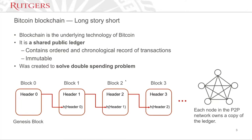Blockchain is the underlying technology of Bitcoin, and Bitcoin is the application of blockchain — that's the relationship between the two terms. Nowadays these two terms are so hot that people use them without understanding the relationship between them.